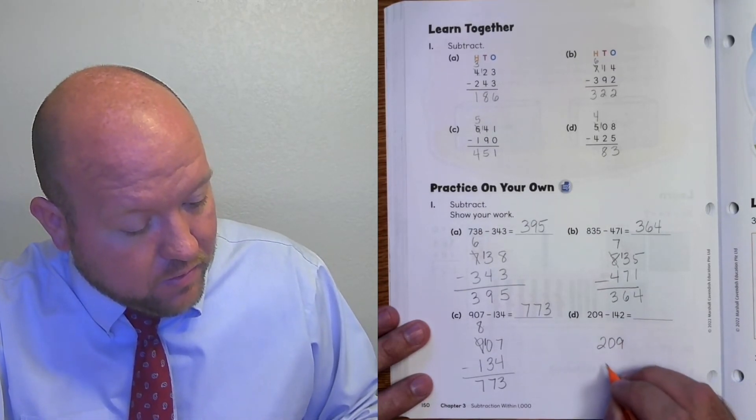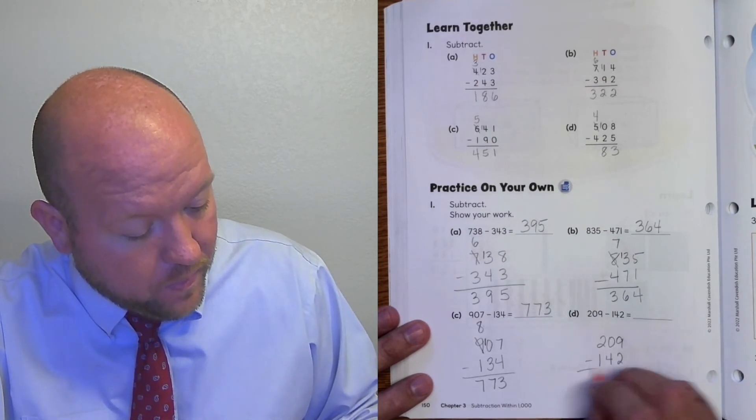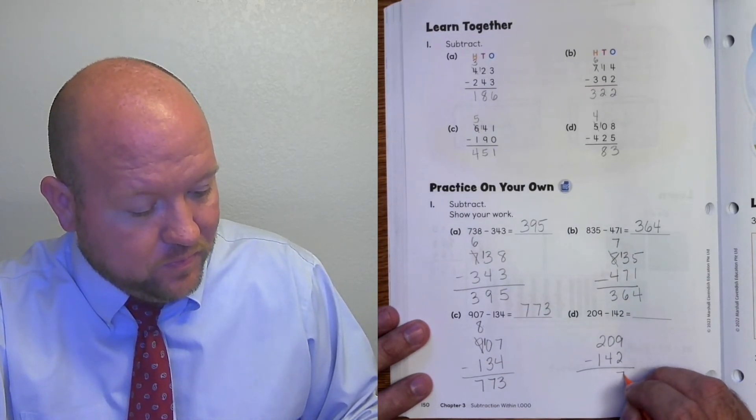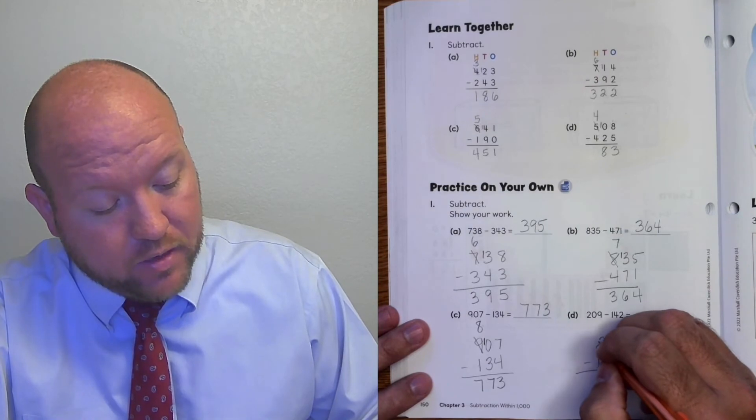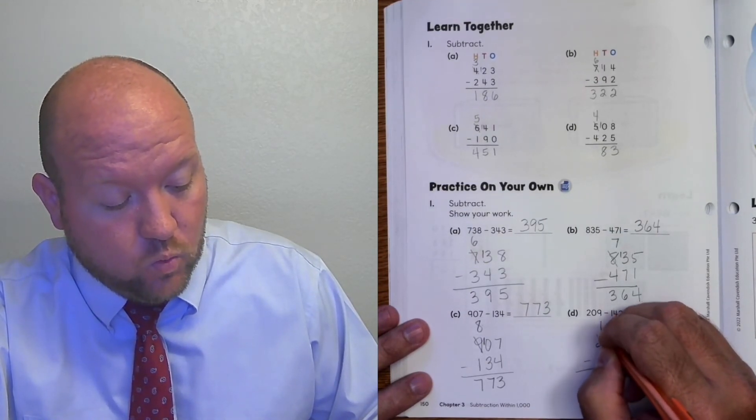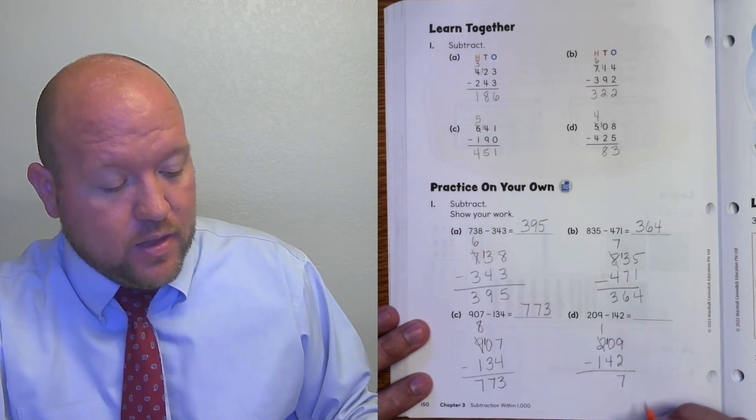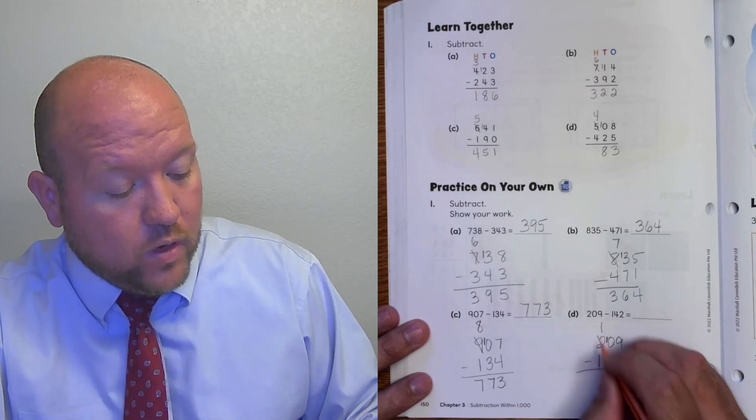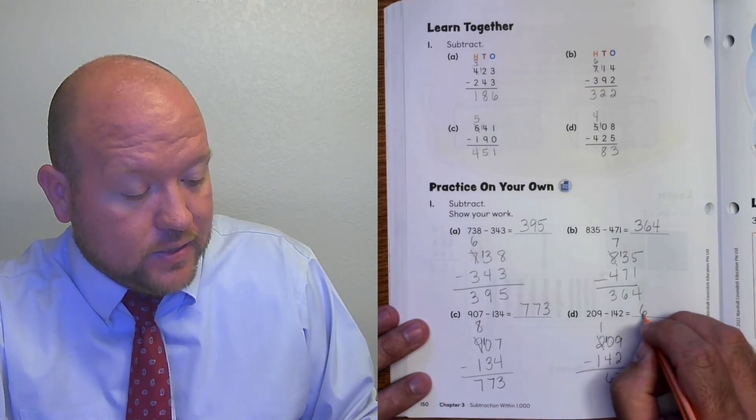209 minus 142. 9 minus 2 is 7. 0 minus 4... I need to rename. The 2 becomes a 1. The 0 becomes 10. 10 minus 4 is 6. 1 minus 1 is 0. And I don't actually need to put that. And the answer is 67.